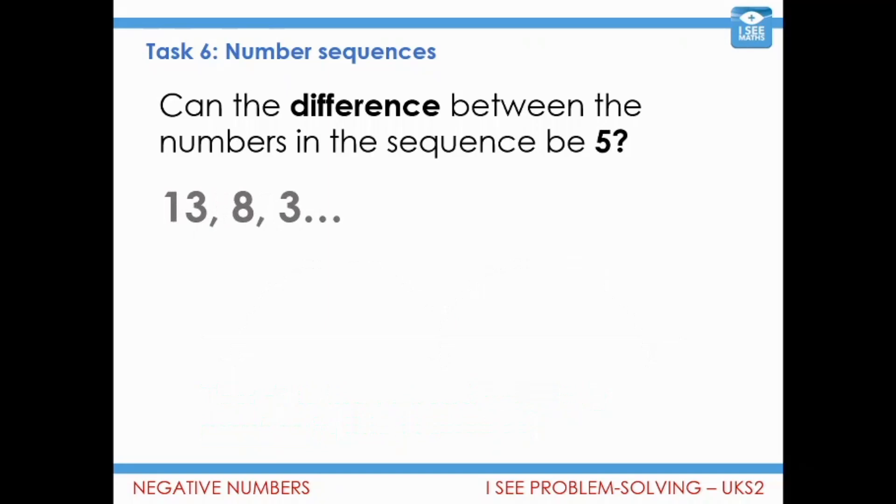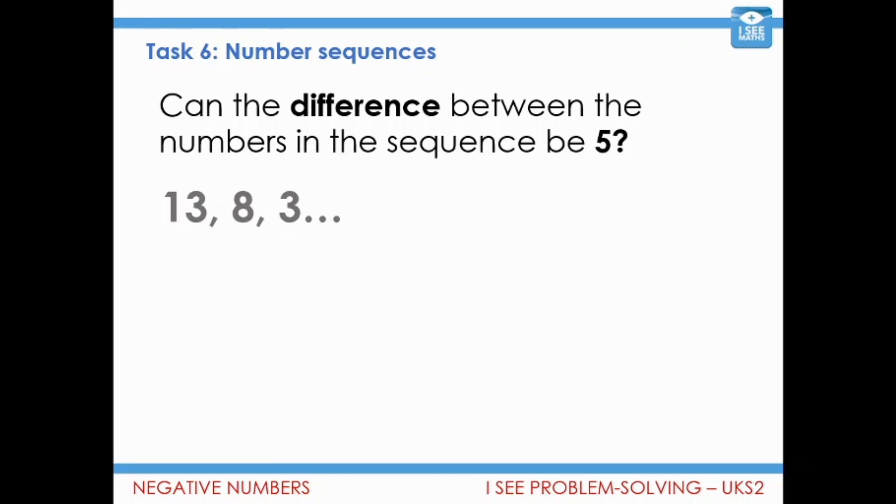Could we be going down in fives? Like this sequence here. Yeah, that would work. Three. And then if I subtract five, I get to minus two and then minus seven.